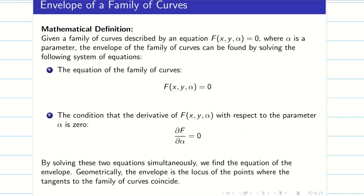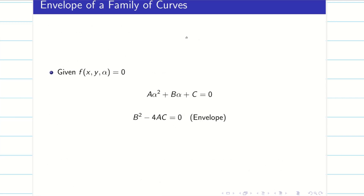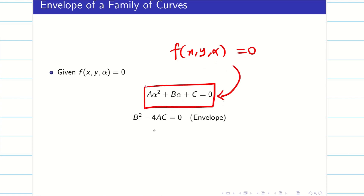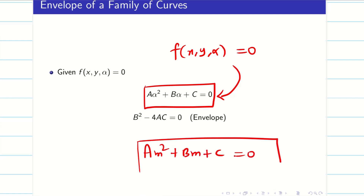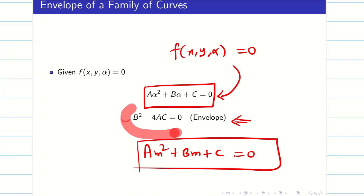The envelope is the locus of points where tangents of family of curves coincide. We have two techniques to find the envelope. For a given problem F(x, y, alpha) = 0, if you can represent the given equation as quadratic in terms of alpha — or in terms of m if it is given in m — then the formula for the envelope is simply B² − 4AC = 0.